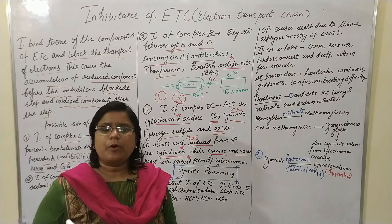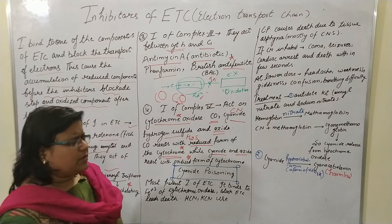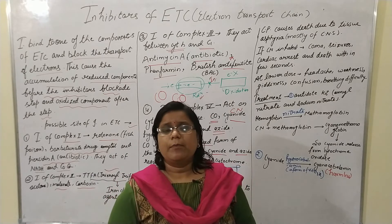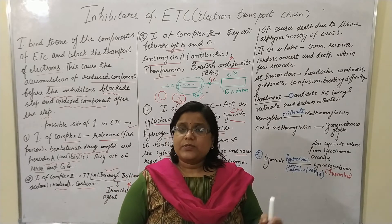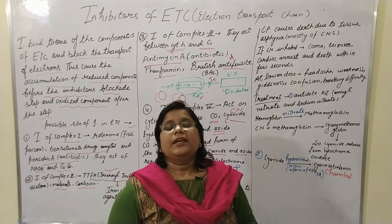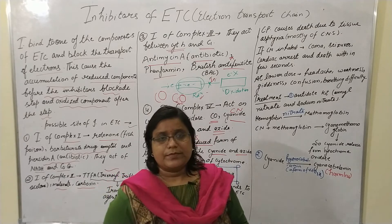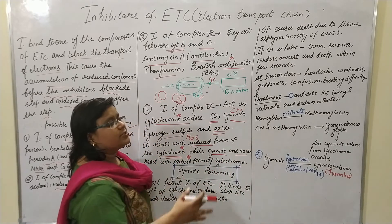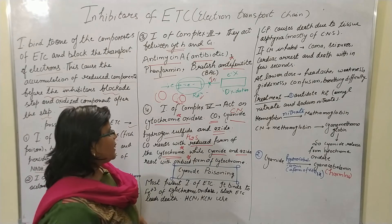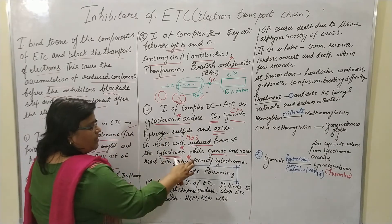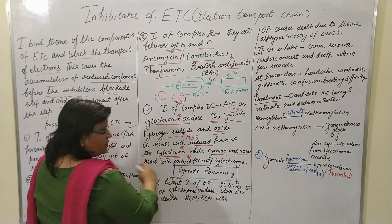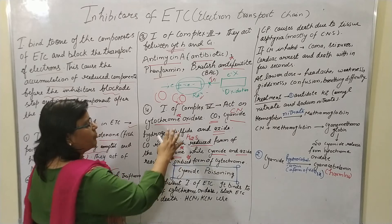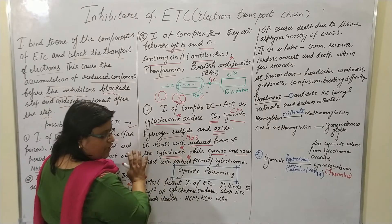Now let's come to cyanide poisoning, which appears as a short note question in exams. Cyanide poisoning comes under the topic of inhibitors because cyanide is an inhibitor of complex 4, and it acts on the oxidized form of cytochrome oxidase.